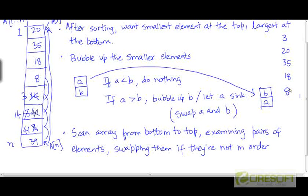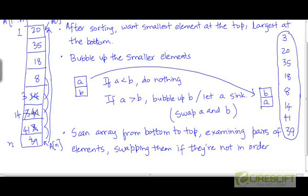The resulting array will be: 3, 20, 35, 18, 8, 14, 41, and 39. This is how the array will look after one scan from bottom to top, by bubbling up the smaller elements and swapping consecutive pairs whenever they are out of their correct ordering. So at the end of this scan step, the smallest element in the original array is now present in location a[1].